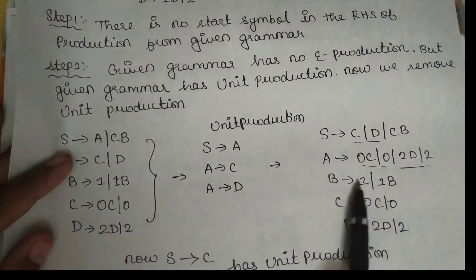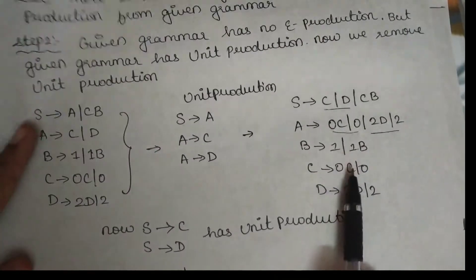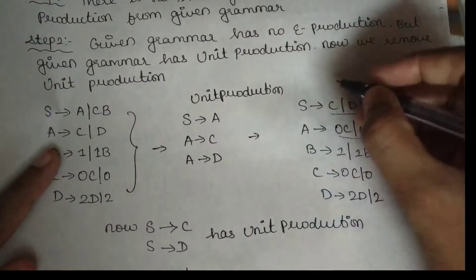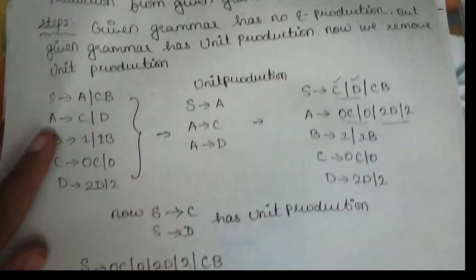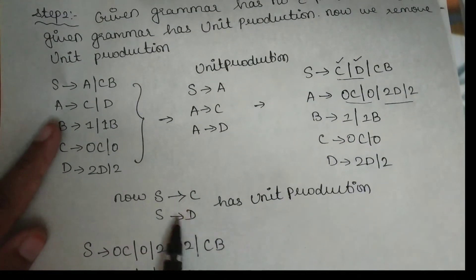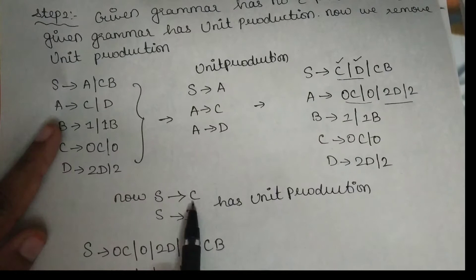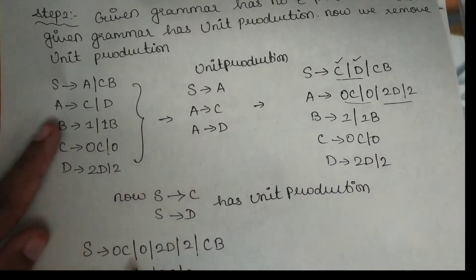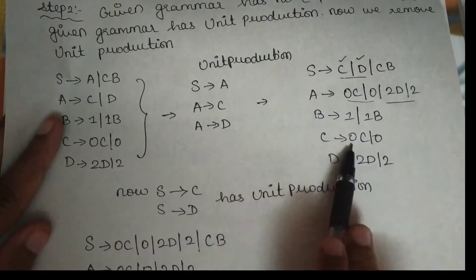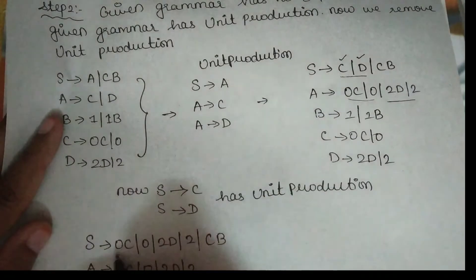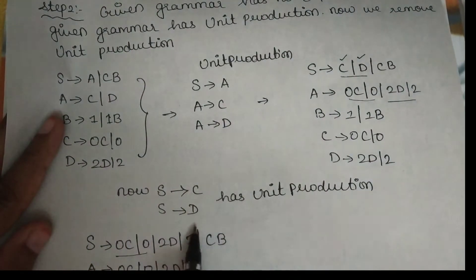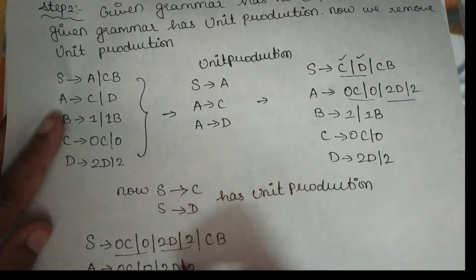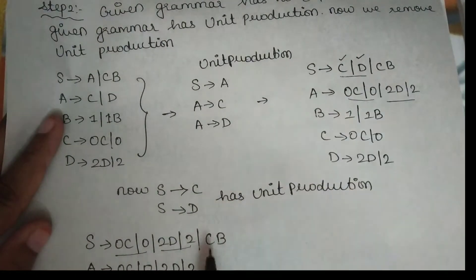For the remaining unit productions — S to C and S to D — we substitute. If S goes to C, the value of C is 0C0. The value of D is 2DD. The value also includes Cb. That is the substitution for the unit productions.